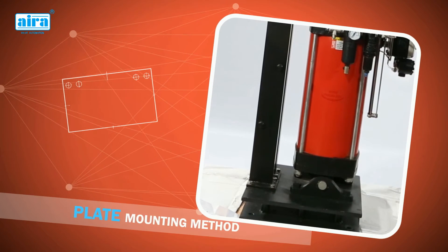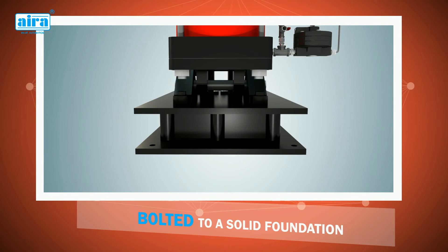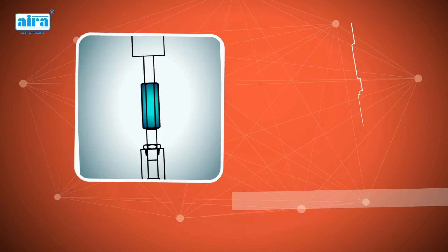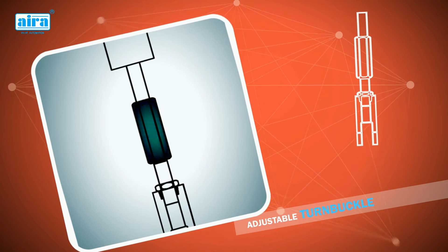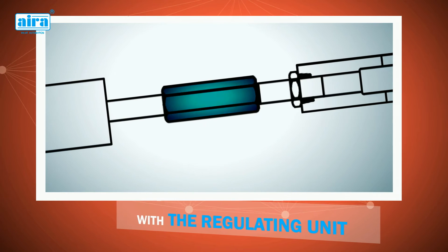While with the plate mounting method, the cylinder is supported on an end mounting plate which is bolted to a solid foundation. The cylinder can be supplied with an adjustable turn buckle if required to line up the power cylinder with the regulating unit.